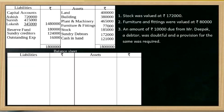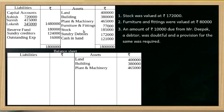Now preparing the balance sheet. On the asset side: land is Rs. 4,000, building is Rs. 3,800, plant and machinery is Rs. 4,000, and furniture and fittings values are recorded at revalued amounts.